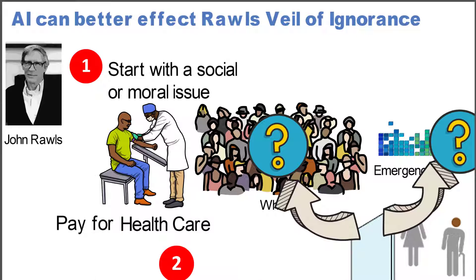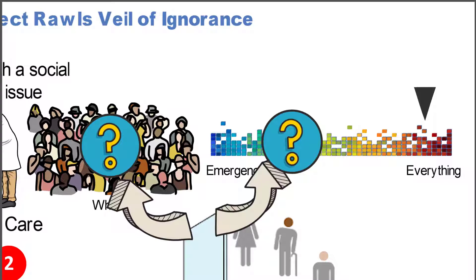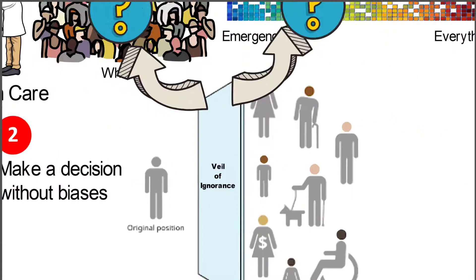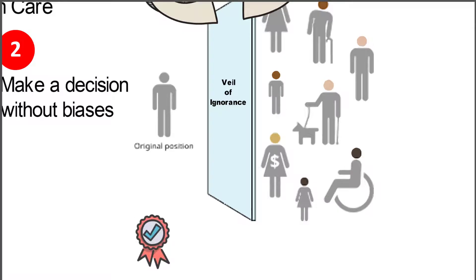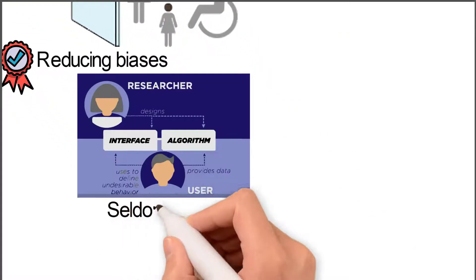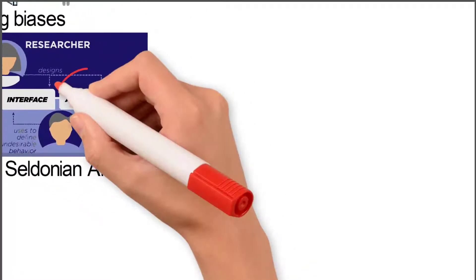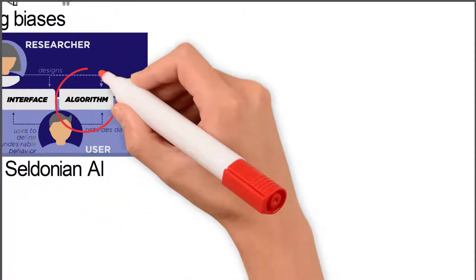Even looking at who's going to pay for it doesn't change much — who pays and at what level is a very similar decision process. The winning strategy Rawls is talking about is how can we reduce biases. We've already identified in our video on Seldonian AI that there's a process in artificial intelligence where an interface is built specifically to reduce biases and stop undesirable behavior.